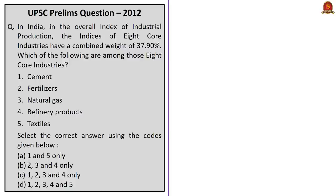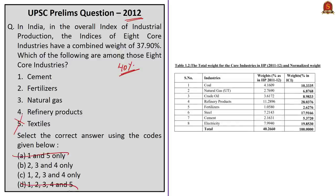There is a previous year question from prelims 2012: In India, in the overall index of IIP, the indices of eight core industries have a combined weight of 37% — as of now it is around 40%. Which of the following are among those eight core industries? The options include cement, fertilizers, natural gas, refinery products, and textiles. Textiles is not part of the eight core industries, so options A and D can be eliminated. The correct answer is option C, as cement is a part of the eight core industries. The decreasing order of weightage of the eight core industries is: refinery products, electricity, steel, coal, crude oil, natural gas, cement, and fertilizers.